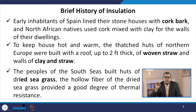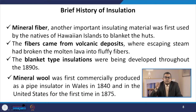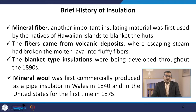Early inhabitants of Spain lined their stone houses with cork bark, and North African natives used cork mixed with clay for the walls of their dwellings. To keep houses warm, the huts of northern Europe were built with a roof up to 2 feet thick of woven straw and walls of clay and straw. The peoples of the South Seas built huts of dried seagrass, whose hollow fibres provided a good degree of thermal resistance. Mineral fibres were first used by the natives of the Hawaiian Islands to blanket their huts, coming from volcanic deposits where escaping steam had broken molten lava into fluffy fibres.